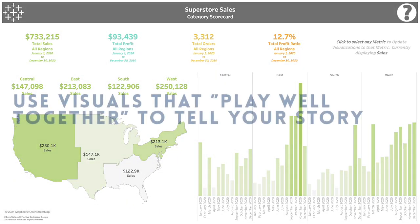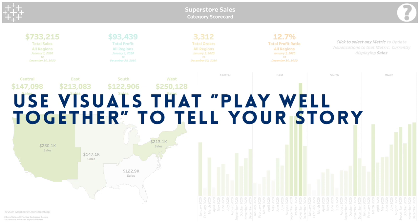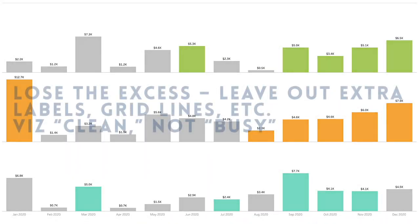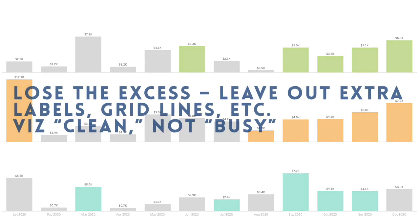Second, tell the data story. Similar to the last point, using cohesive visualizations that build upon each other can be an effective data storytelling tool. Third, less is more. Consider things like gridlines, excessive labels, color legends, etc. Do they contribute to the overall message or do they just cloud it?